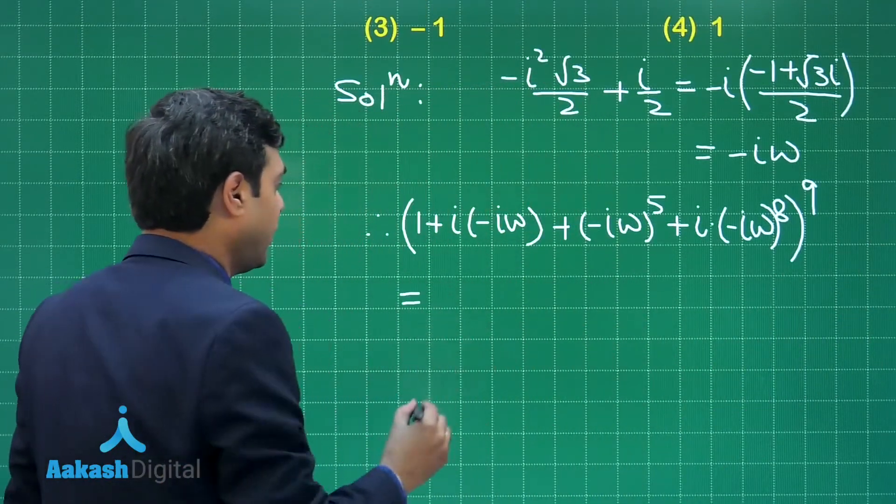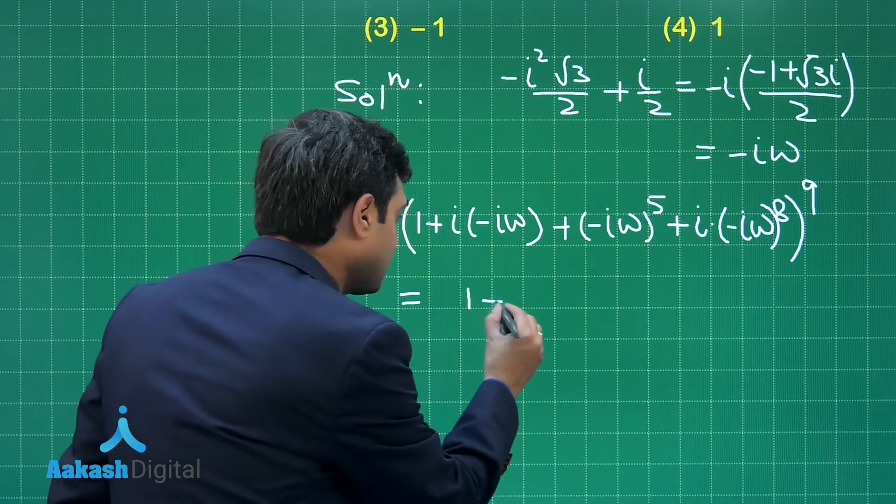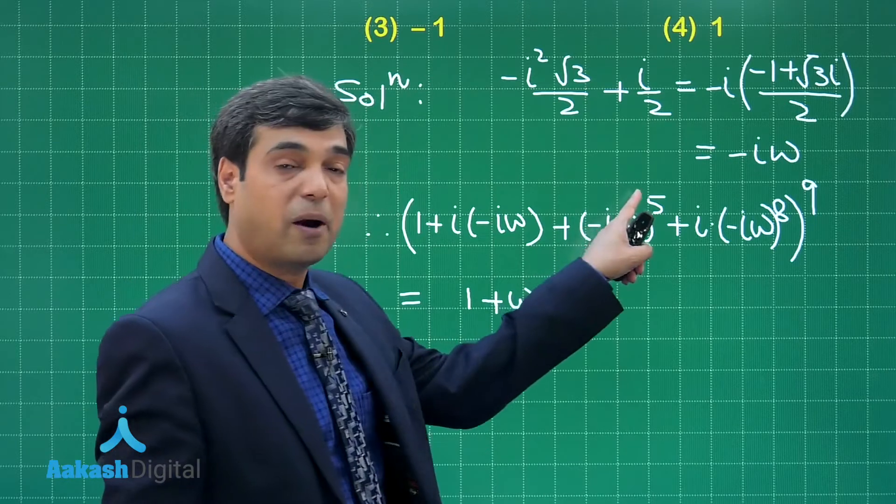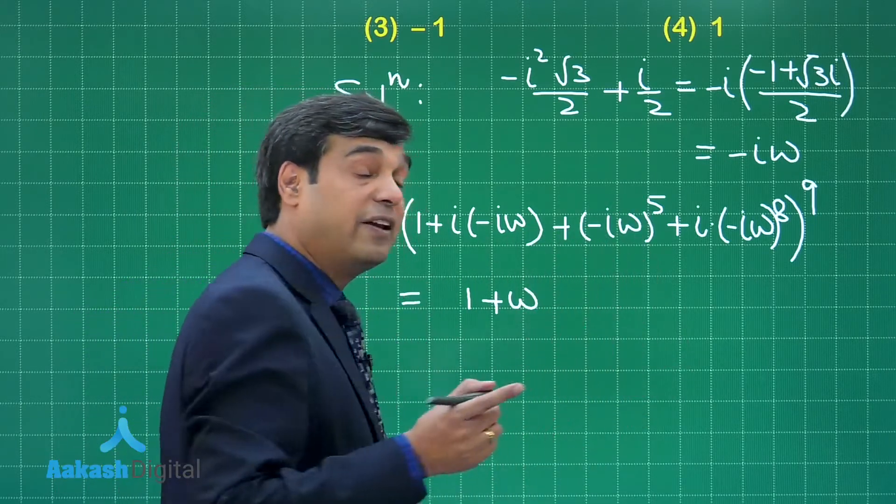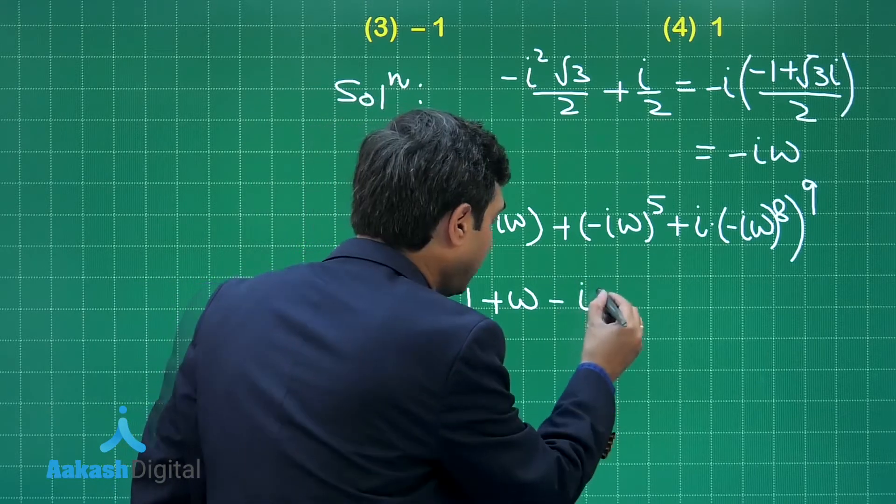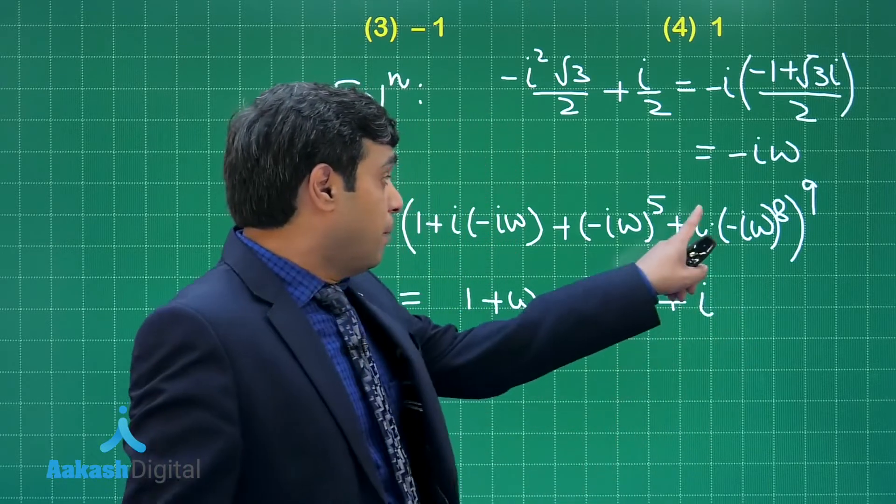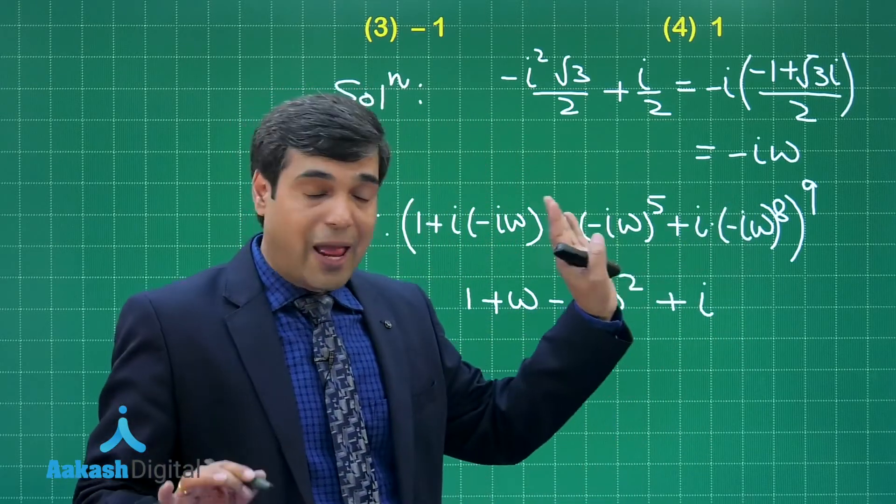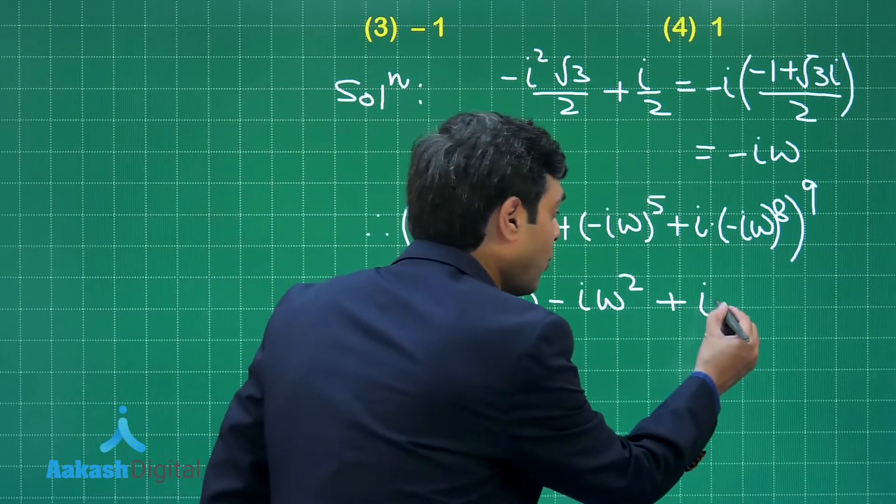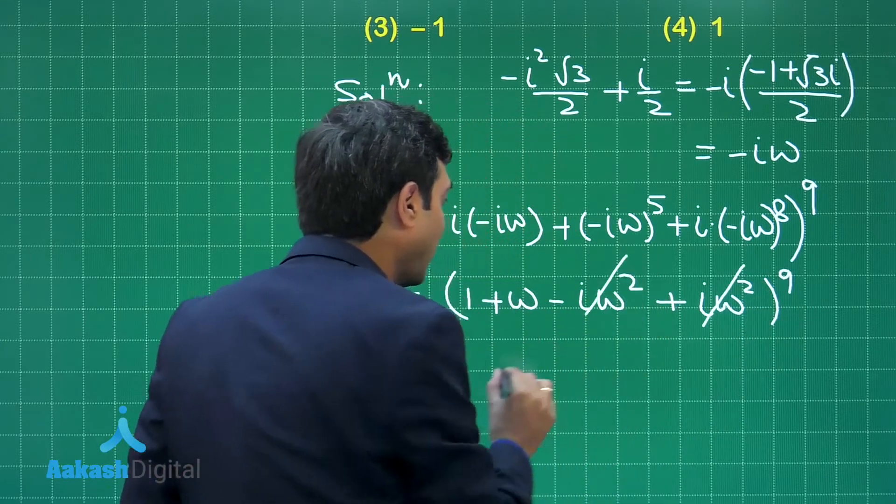Moving forward we can write 1. i² is -1, so it becomes +ω correct. Next, -i to the power 5 will give you -i only. ω⁵ will give you ω². So you have -iω² plus i, -1 to the power 8 is 1, i⁸ is 1, ω⁸ is ω², whole raise to the power 9. Now we can see these two are cancelled.